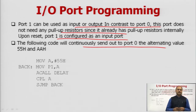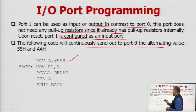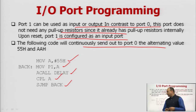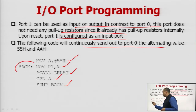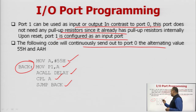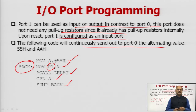To make port 1 an input port, configure it by sending 0FFH to it. With the program, the content of the accumulator equals 55H, then transfer A to P1, call the delay, complement the content of the accumulator, and execute the short jump instruction to transfer control back to the target label. This program toggles the bits of P1 after a certain amount of delay, meaning 0 bits are replaced by 1 and 1 bits by 0.